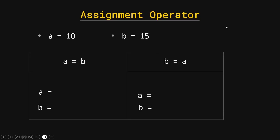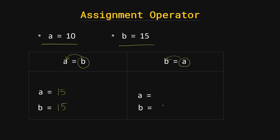Here is an example: let's say a = 10 and b = 15. If we write a = b, the assignment operator takes the value of b (which is 15) and assigns it to a, so a becomes 15 while b remains unchanged. Conversely, if we write b = a, the value of a (10) is assigned to b, so b becomes 10 while a remains unchanged.